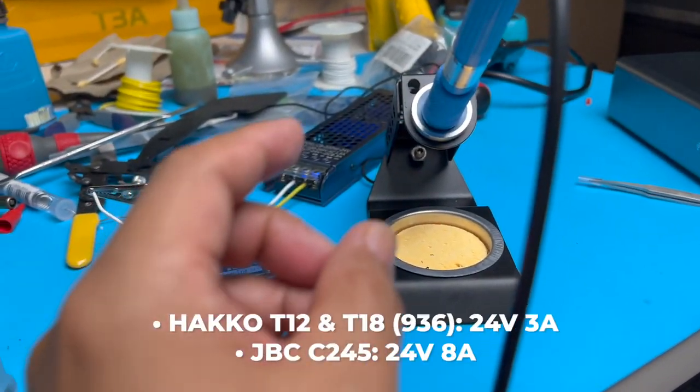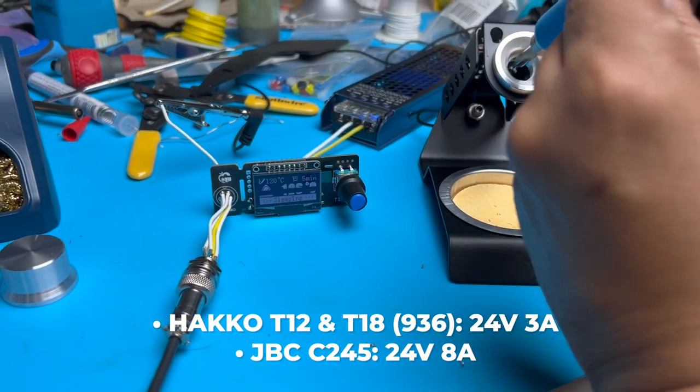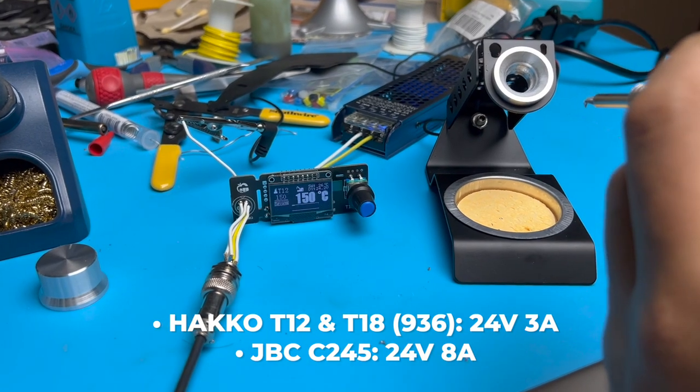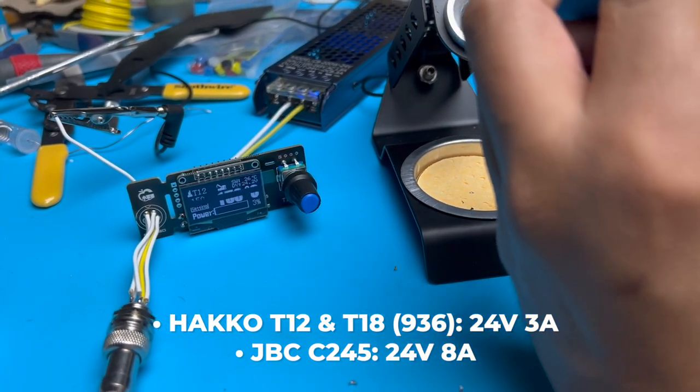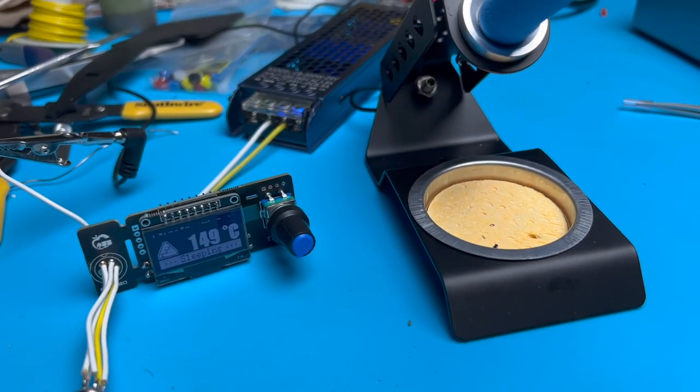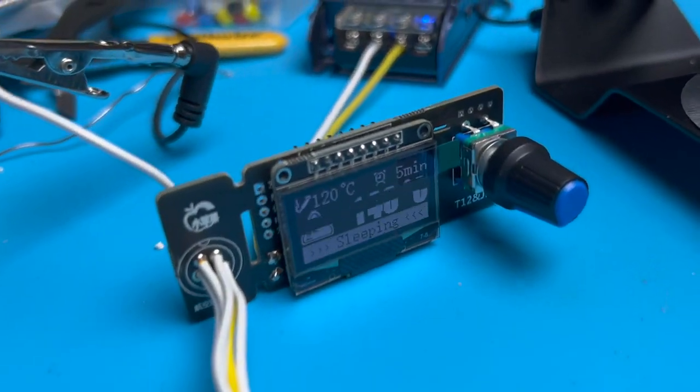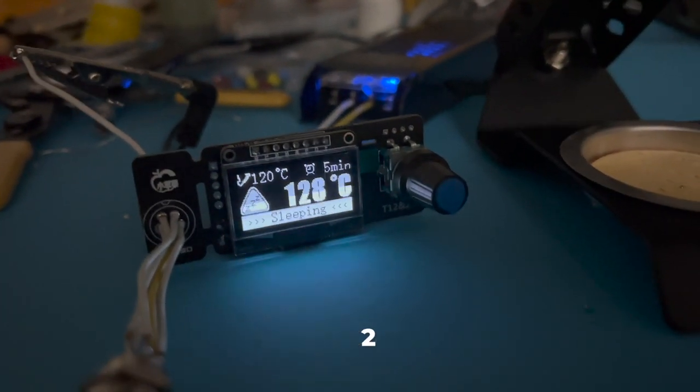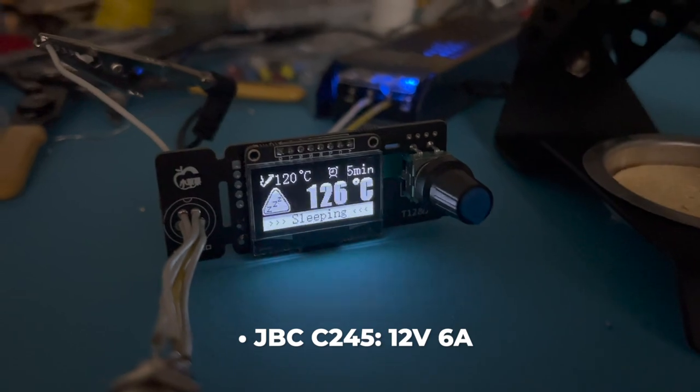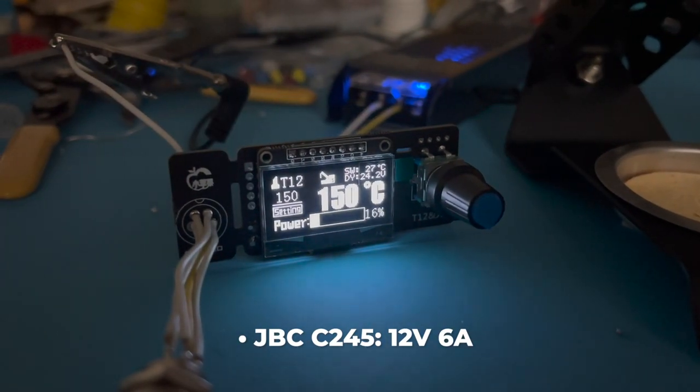By the way, the Hakko T12 and T18 tips only require 24 volts and 3 amps, but a JBC C245 requires 24 volt 8 amps. The flickering of the screen is not noticeable when viewing in person. This is what you would normally see. Additionally, the JBC C245 tips require 12 volts and 6 amps.